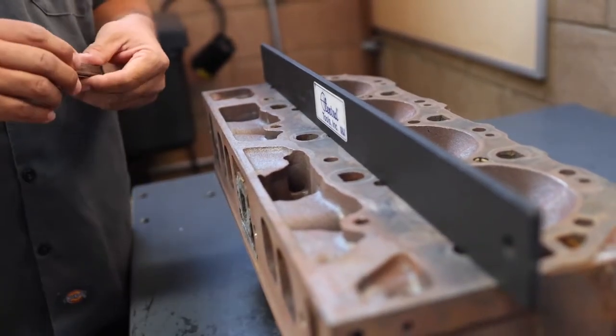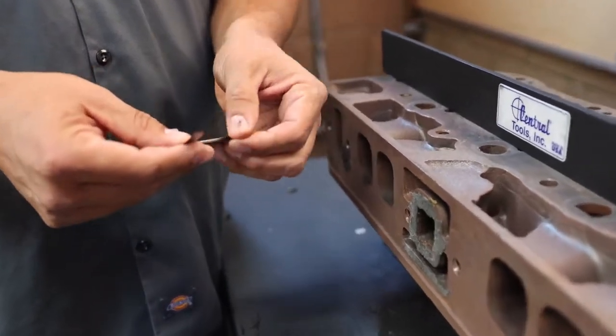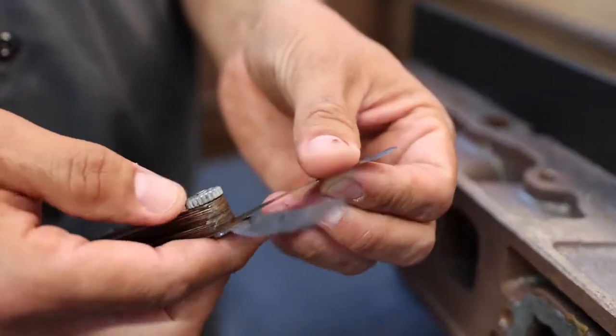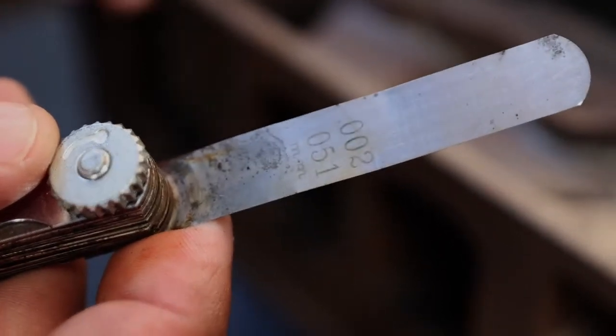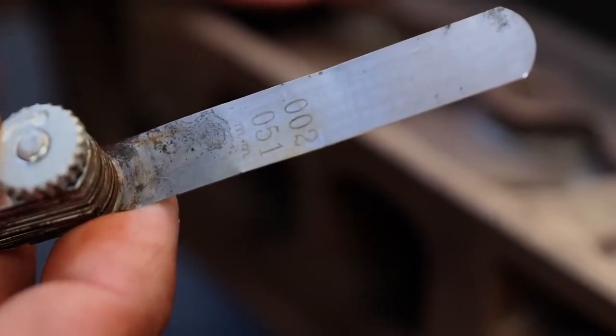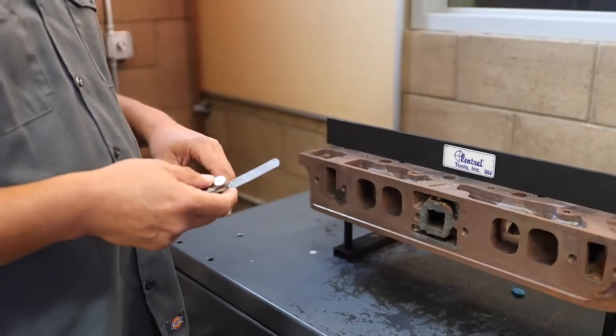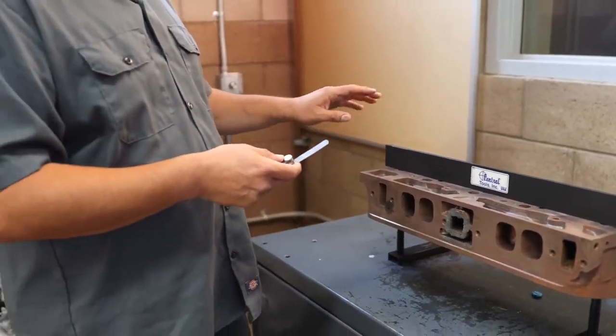We use this tool called the filler gauge. And what I'm going to do is I'm going to start with my two thousandths of an inch filler gauge. That's two thousandths of an inch. That is the specification for many manufacturers. So if this cylinder head is warped by two thousandths of an inch or more, it's going to need to be replaced.